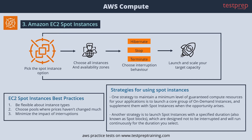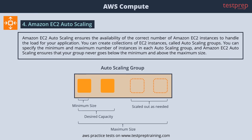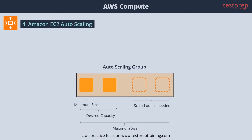Amazon EC2 Auto Scaling ensures the availability of the correct number of EC2 instances to handle the load for your application. You can create collections of EC2 instances called auto scaling groups. You can specify the minimum and maximum number of instances in each auto scaling group. If you specify the desired capacity, Amazon EC2 Auto Scaling ensures that your group has that many instances. If you specify scaling policies, Auto Scaling can launch or terminate instances as demand on your application increases or decreases.